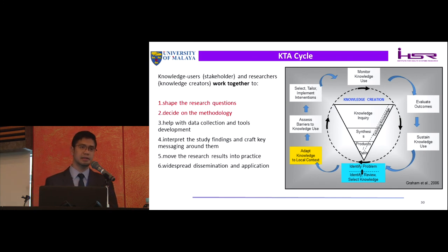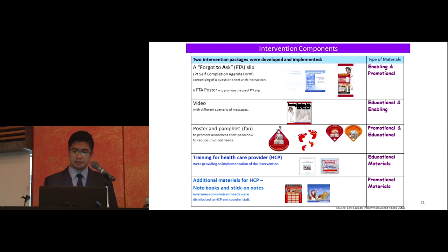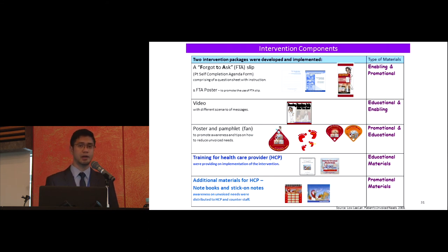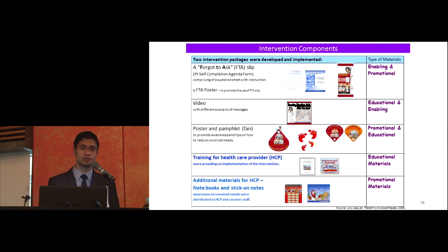Once the problem was identified, the next step was to use that knowledge to develop an intervention package. They sat down with stakeholders and developed several intervention components affecting both patients and healthcare providers. First, the 'Forgot to Ask' slip — a patient self-completion agenda form given at the registration counter for patients to write down their concerns before seeing the doctor. There were also videos and posters to increase awareness during waiting time. For healthcare providers, there were guidelines, training, notebooks, and sticker notes to remind them to address unvoiced needs during consultations.